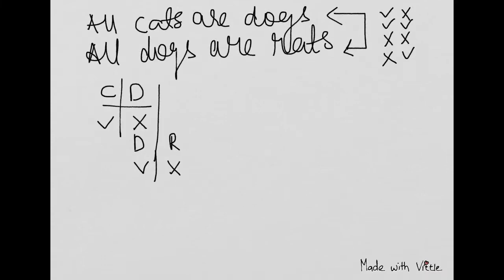This is my chart. Middle term at least once distributed. I will not consider the middle term in the conclusion. What all we will take? C and R with tick cross.